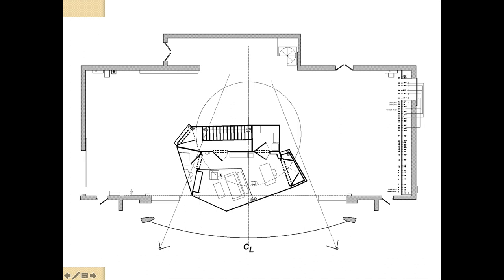The ground plan also communicates walls shown as thicker lines, doorways and doors that swing — indicating which direction the doors are moving — and some of the furniture pieces and their placement within the set.